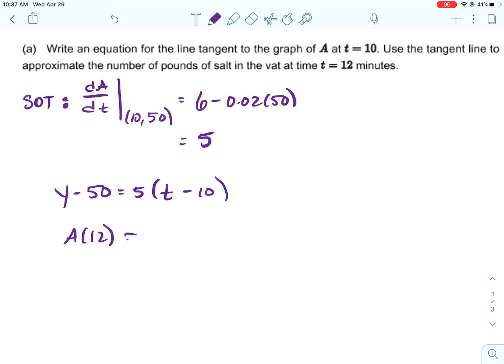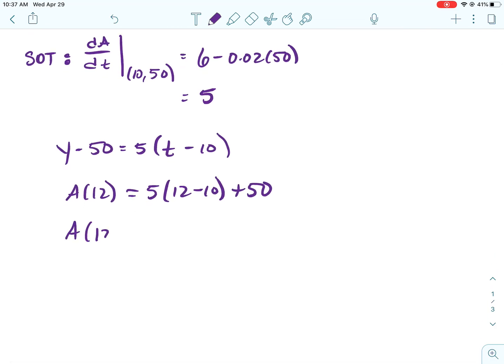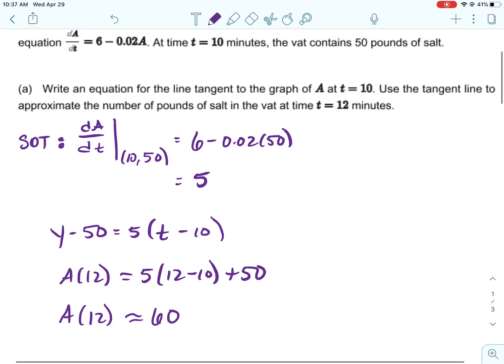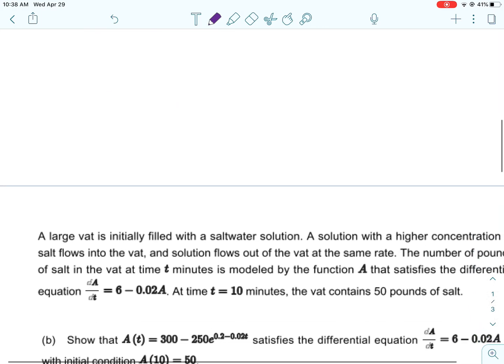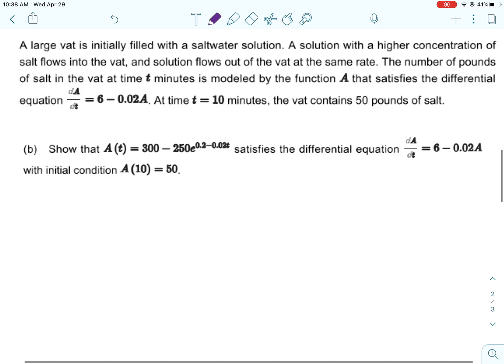So I would use my point and my slope. I think it's important here that you use t as you do not use x. And so I am approximating 12. So it's going to be 5 times (12 minus 10) plus 50. So A is approximately 60, 60 pounds of salt.